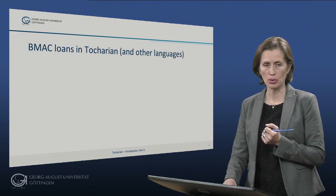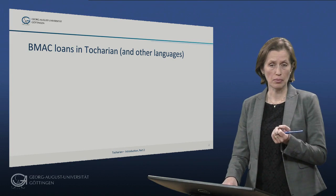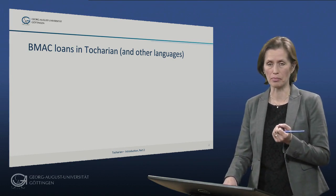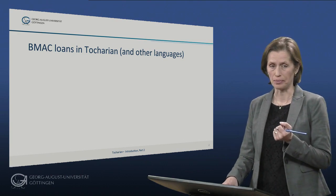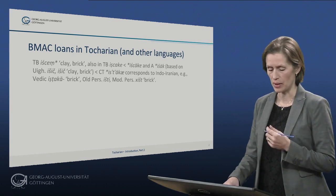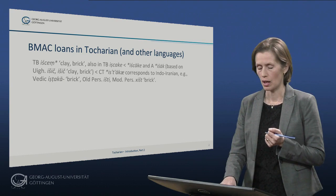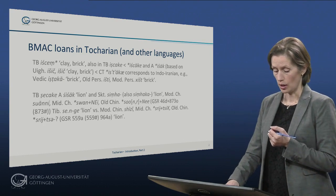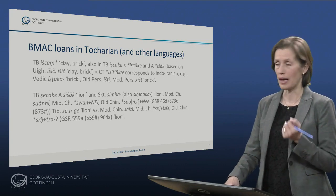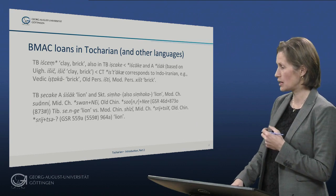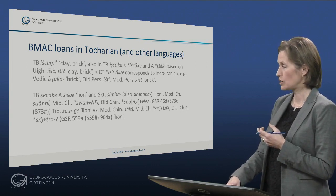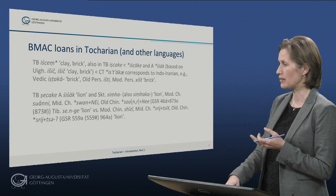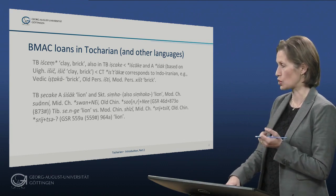Iranian loans are important in Tocharian. Several of them are very likely from the so-called BMAC culture, the Bactria-Margiana Archaeological Complex, which is a state associated with early Indo-Iranian. For instance, we have Tocharian B 'ischem' which means clay and brick. We also have the well-known word for lion, also found in Sanskrit as 'sima' or 'simaka', and in modern Chinese. This is probably a loan from the BMAC culture or from early Indo-Iranian or early Indo-Aryan into all these languages including Tocharian.